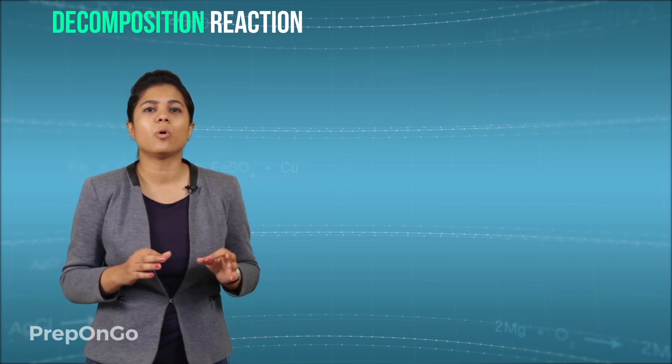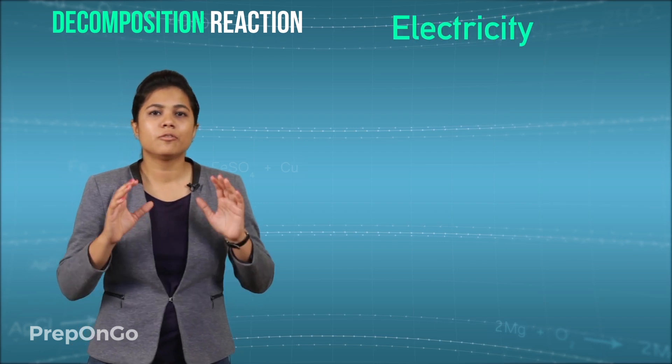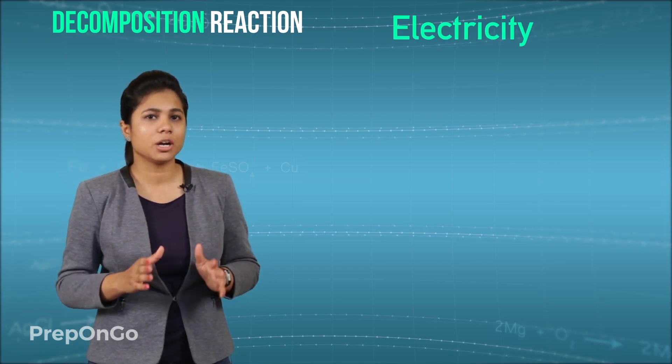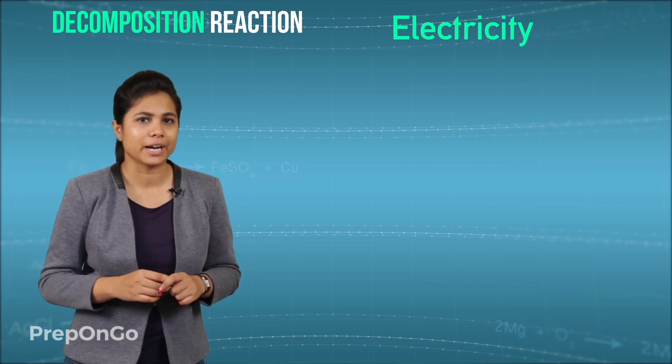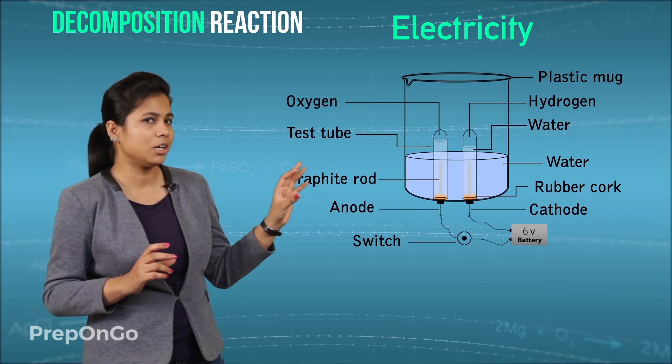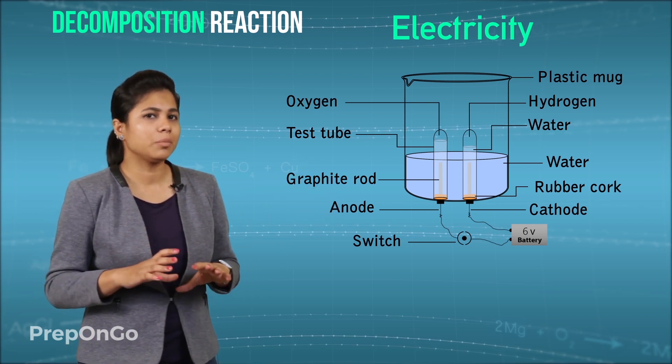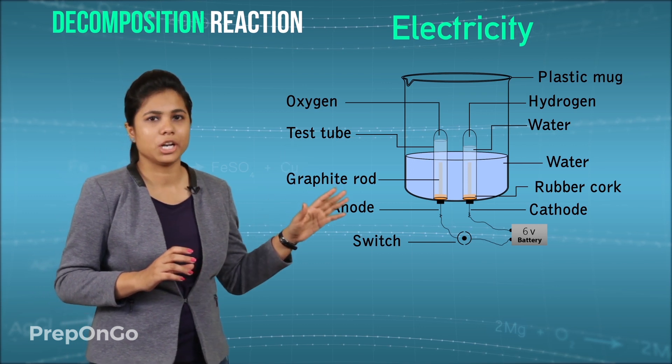So we have seen what heat does. Now let's jump on to electricity. For seeing electricity decomposition let's perform an activity. For this we have a plastic mug which we have drilled with two holes at its base and inserted the rubber cork. In that rubber cork we have inserted two carbon electrodes.